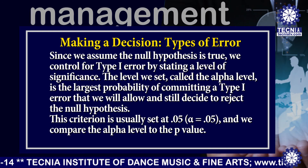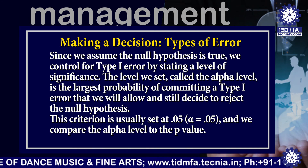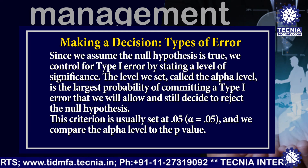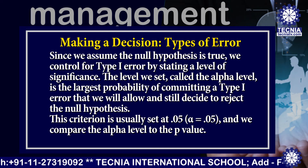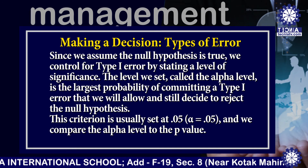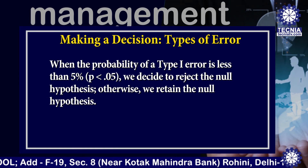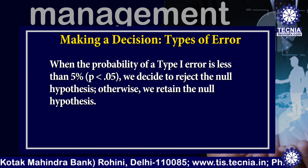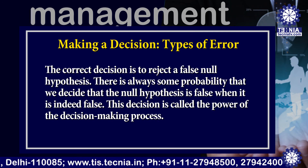Since we assume the null hypothesis is true, we control for Type 1 error by stating a level of significance. The alpha level is the largest probability of committing a Type 1 error that we will allow and still decide to reject the null hypothesis. This criterion is usually set at 0.05, and we compare the alpha level to the p-value. When the probability of a Type 1 error is less than 5 percent, we decide to reject the null hypothesis; otherwise, we retain it.